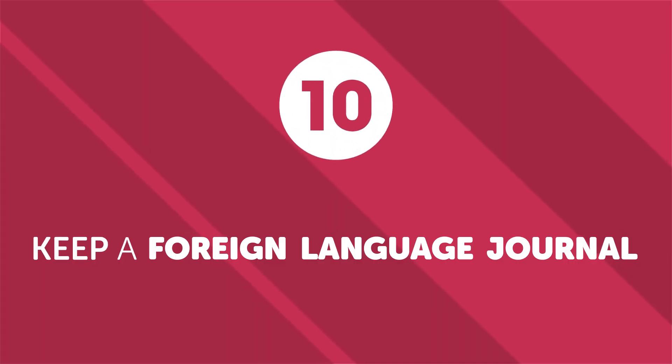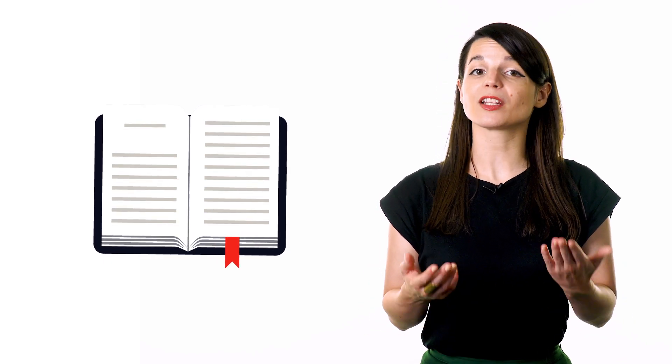Number ten, keep a foreign language journal. Like mentioned earlier, keeping a daily journal in your target language is a great way to practice practical language skills. It just takes five minutes every day to write something quick about your day, your goals, or things you might be looking forward to. This will help you stick new expressions into your brain and improve communication, writing, and language skills. It also gives you a very real way to see your skills improve as you progress in your studies.